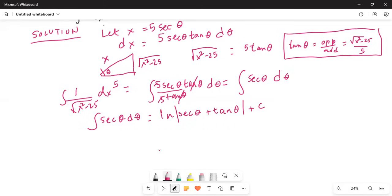Now, from the triangle secant theta is 1 over cosine theta. Cosine theta is equal to natural log of secant theta. Cosine theta itself is equal to 5 over x, adjacent side by hypotenuse. And so secant theta will be x over 5, the inverse. So natural log secant theta is x over 5. And what is tangent theta? Tangent theta is opposite side by adjacent side. Square root of x squared minus 25 divided by 5, plus c.